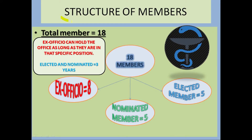Let's know about the structure of members. There are a total of 18 members in DTAB, divided into three major groups: ex officio, nominated members, and elected members. In ex officio there are eight members, in nominated members there are five, and in elected there are five. Ex officio members can hold office as long as they are in that specific position, but elected and nominated members can hold for three years only.